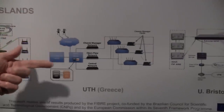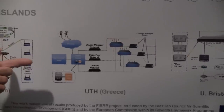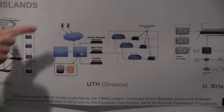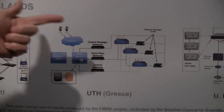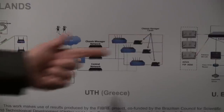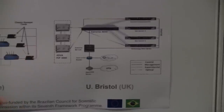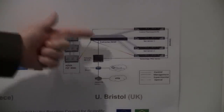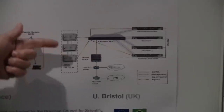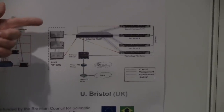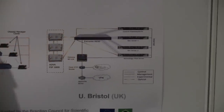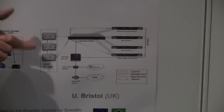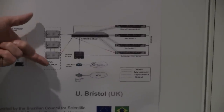The UTH is the second island in Greece, controlled by the OMF control framework. And finally, in Bristol, we have the third European island. These islands are composed by optical elements with a high-speed network in the optical domain.